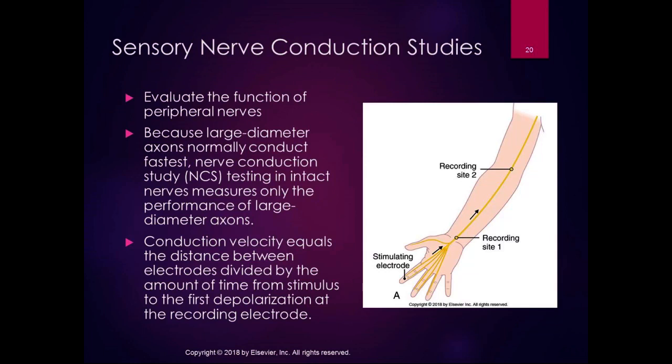Sensory nerve conduction studies are used to evaluate the function of peripheral nerves. Large diameter axons conduct the fastest, and nerve conduction studies test intact nerves by measuring the performance of large diameter axons. A stimulating electrode is placed distally, with sensors at two separate recording sites, measuring conduction velocity — the distance between electrodes divided by the time from stimulus to first depolarization at the recording electrode.